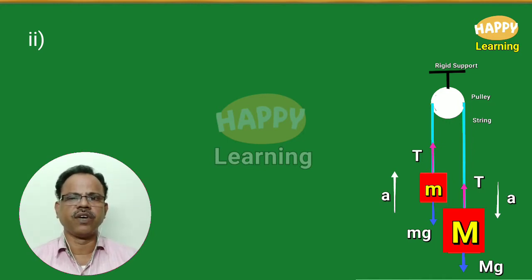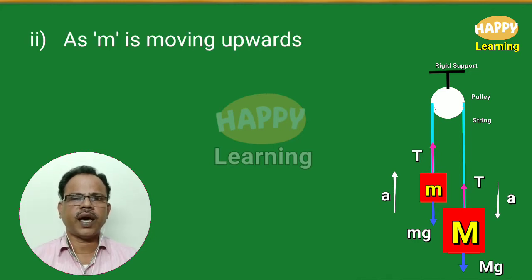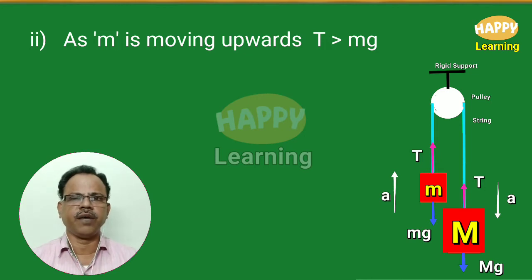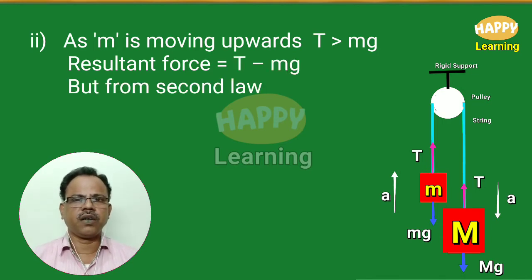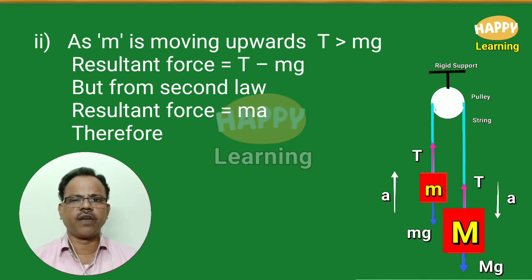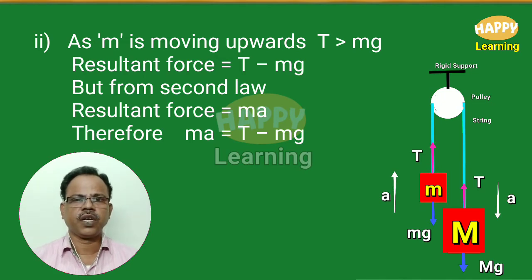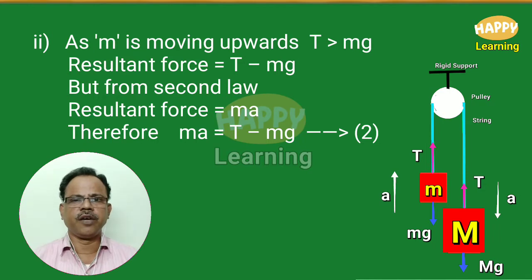Now consider the other block of mass small m. As small m is moving upwards, the tension T will be greater than the weight mg. The resultant force is equal to T minus mg. From the second law, resultant force equals mA. Therefore, mA is equal to T minus mg. Let this be equation number two.